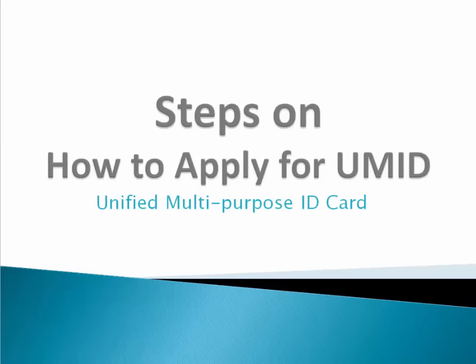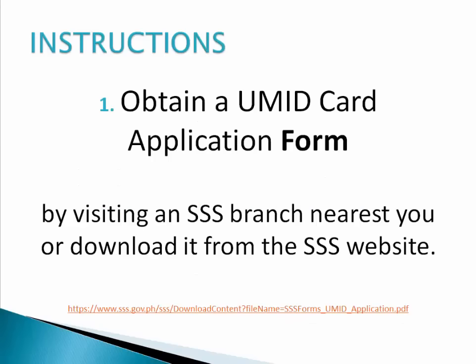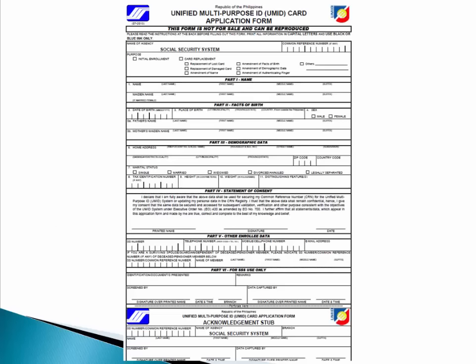These are the steps on how to apply for UMID or Unified Multipurpose ID card. The first step is to obtain a UMID card application form by visiting an SSS branch nearest you or downloaded from the SSS website. I'll also post the link at the description box below. This is the Unified Multipurpose ID card application form and this is what you're going to fill out when you apply for this UMID card.